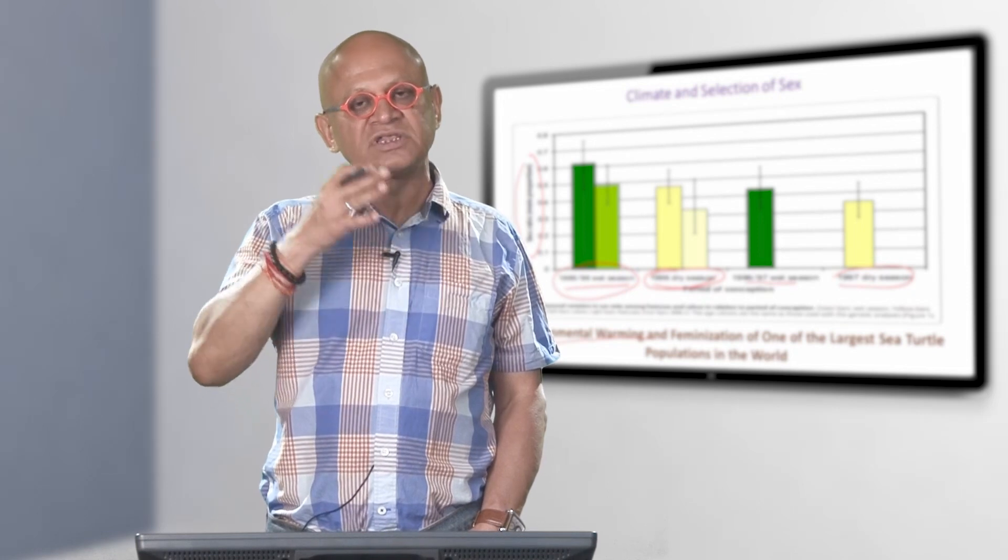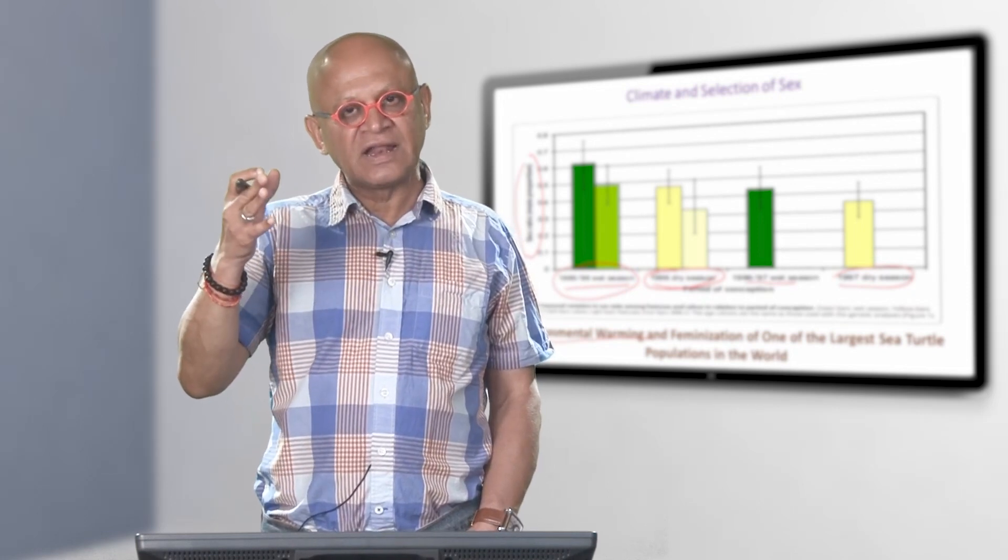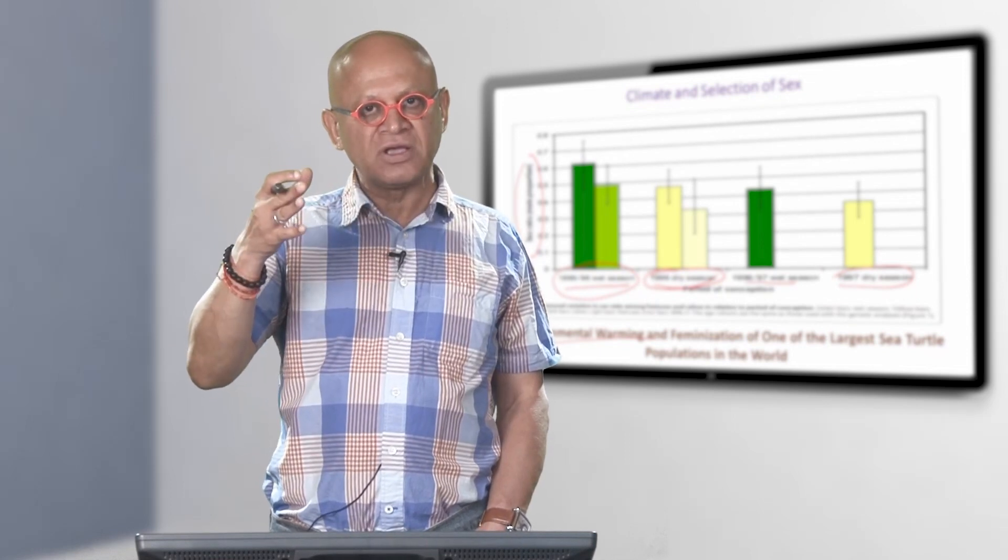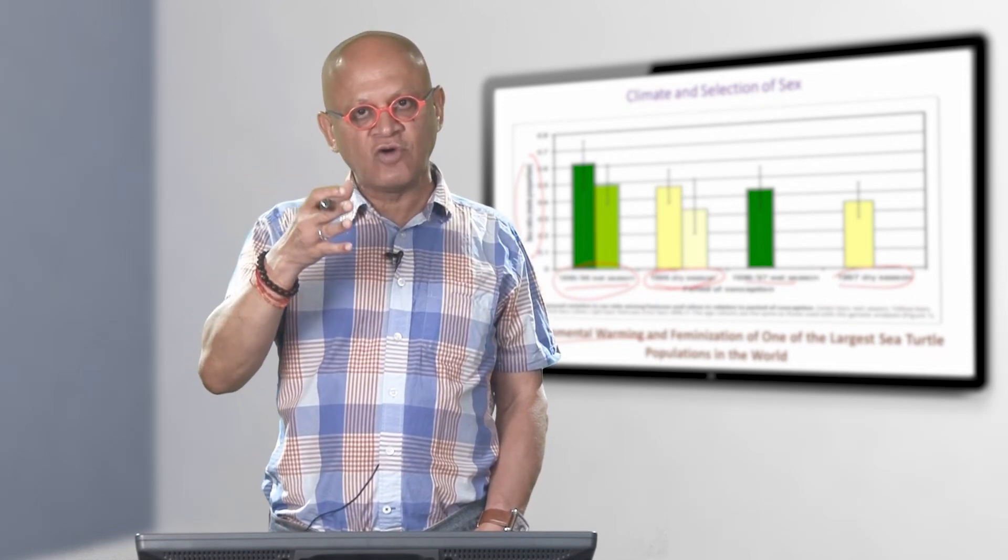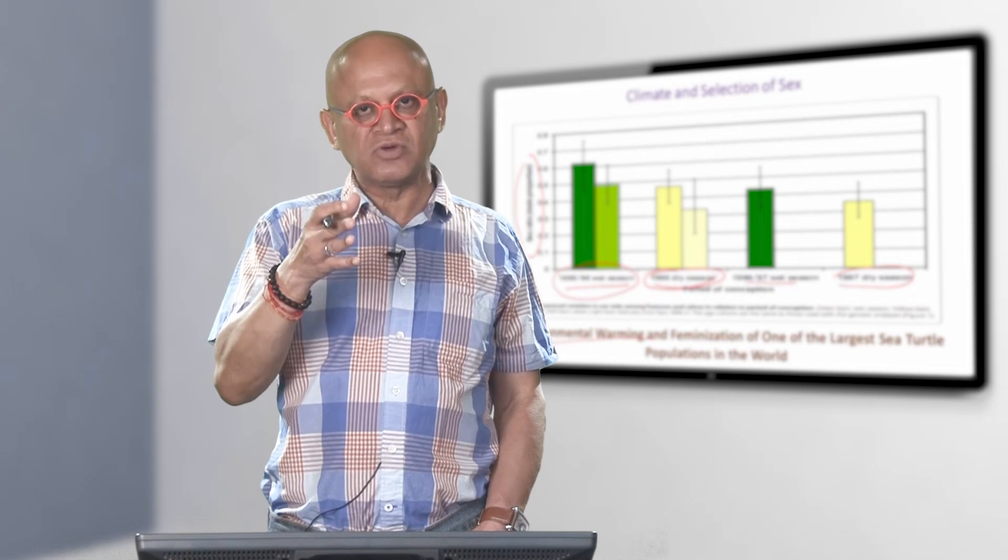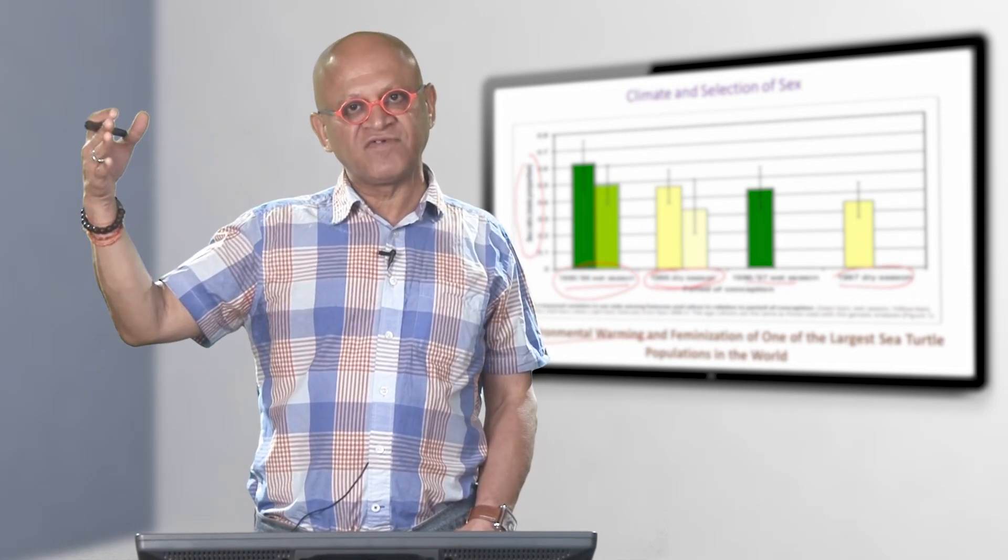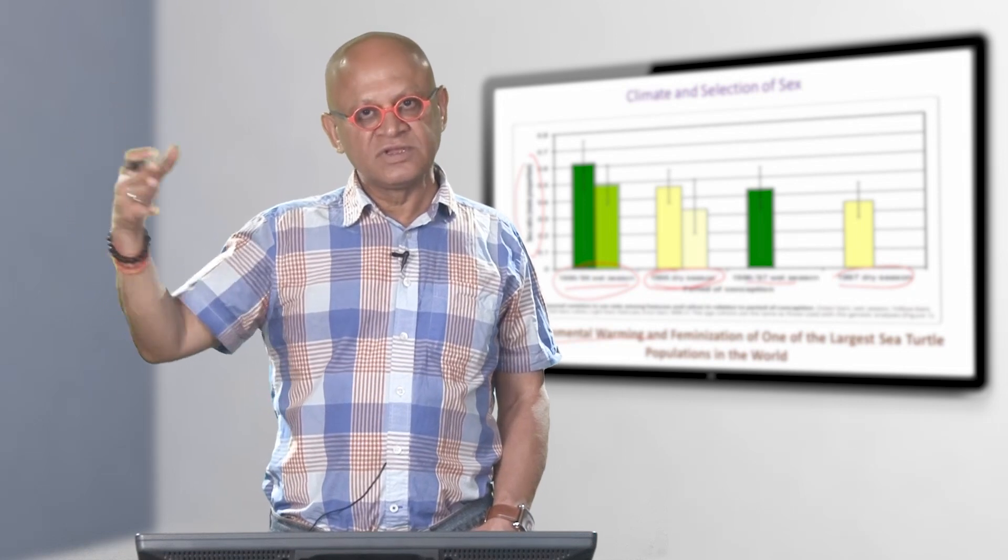So we have to worry about these complicated influences of climate variability and climate change and global warming on the sex ratio of various species. We need to understand that to know how species extinction may be affected indirectly through sex selection.